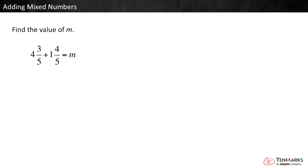Another way to add mixed numbers is to rewrite them as fractions greater than 1. 4 and 3 fifths is the same as 5 fifths plus 5 fifths plus 5 fifths plus 3 fifths. Or, 23 fifths.